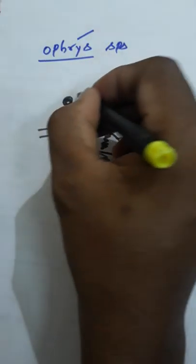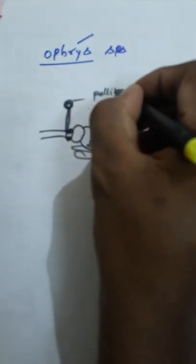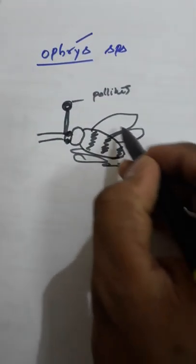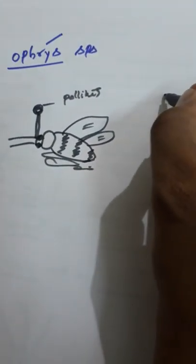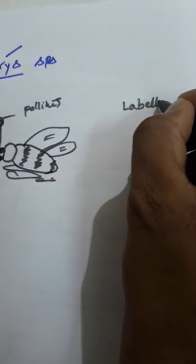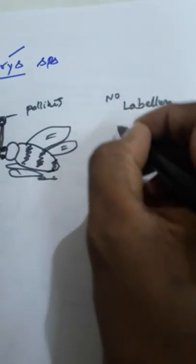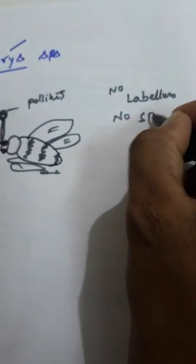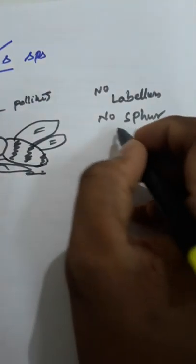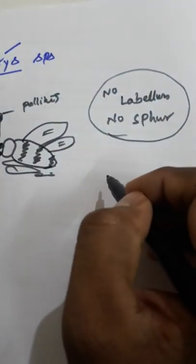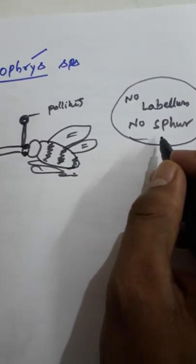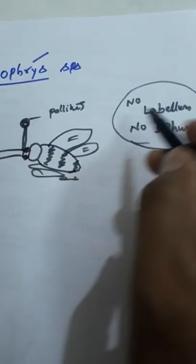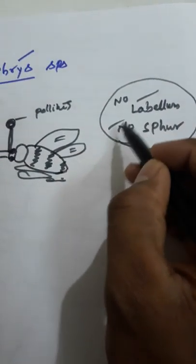It is Ophrys plant. It is pollinium. But actually, it looks like a bee. In this Ophrys species, there is no labellum. There is no spur gland. There is no other extra organs. Extra attracted organs in this flower. There is no labellum, no spur, no nectar.